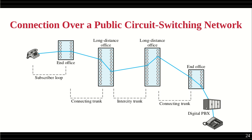For digital communication, we have a digital Private Branch Exchange (PBX) instead of a normal switch, which handles digital signals instead of analog signals. This is our normal analog communication connected to a normal switch. For digital communication, the end device must be capable of supporting it. The connection between the end device and the nearby switching node is called the end office, and this connection is called the subscriber loop.